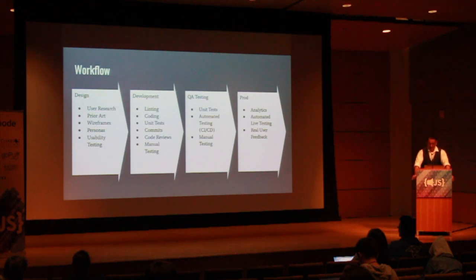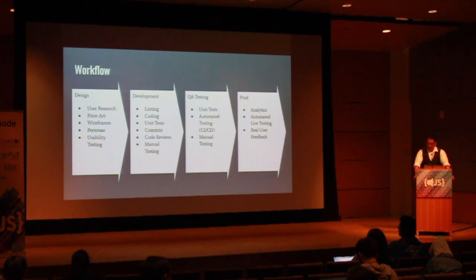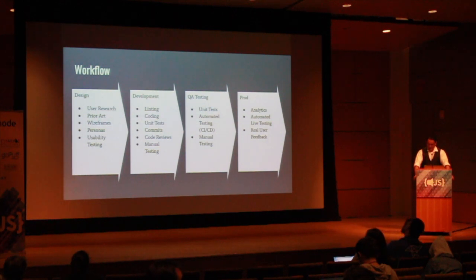In software development, the goal should be to stop as many errors as possible before they get committed and before they get checked in — before they even reach QA. We need to consider accessibility as soon as possible in the process. We need to make sure accessibility is a pleasure to remember and a pain to forget.